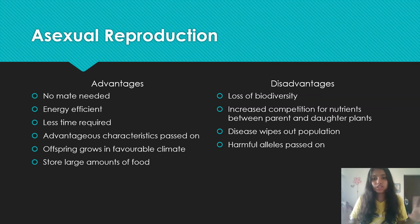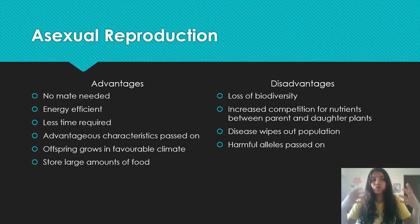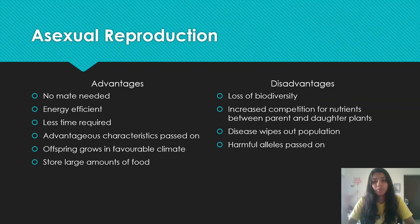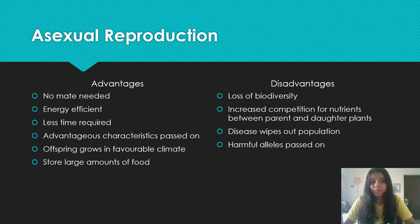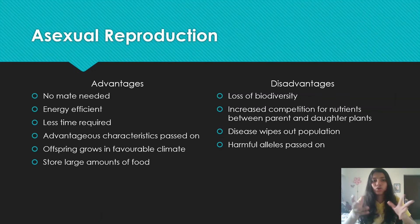The advantages of asexual reproduction: no mate is required; it is energy efficient and requires less energy; less time is consumed because it is much faster. Characteristics are passed on — when you clone the sheep, the same genetic material is passed on in the same combinations, so the same advantageous alleles and characteristics are inherited, helping the organism adapt. The organism grows in a favorable climate, because in asexual reproduction the daughter organism grows right next to the parent plant, so if the climate is favorable for the parent it will also be favorable for the daughter. You can also store large amounts of food, as seen in the potato tuber storing starch for winter or spring.